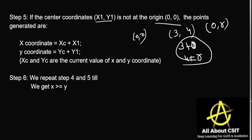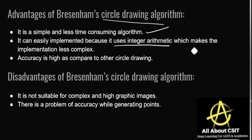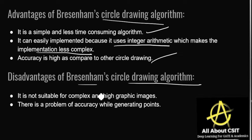We repeat steps 4 and 5 until x ≥ y. Now let's look at the advantages and disadvantages of the Bresenham circle drawing algorithm. Advantages: it is a simple and less time-consuming algorithm; it uses integer arithmetic, making implementation less complex; and accuracy is high compared to other circle drawing algorithms. Disadvantages: it is not suitable for complex and high graphic images — if you want to work on high graphic images, don't use this algorithm — and there is a problem of accuracy while generating the points.